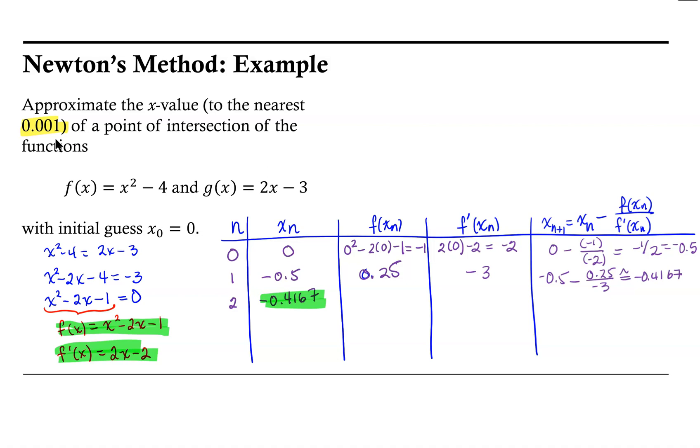We find f(-0.4167) is equal to 0.0070 to 4 decimal places, and then f'(-0.4167) is -2.8334 to 4 decimal places.